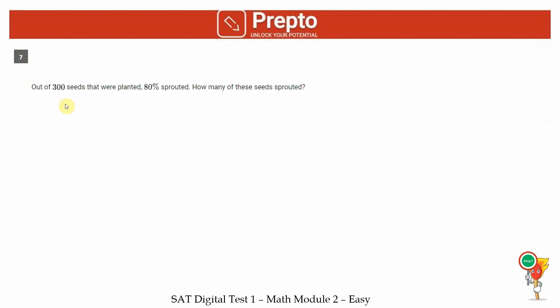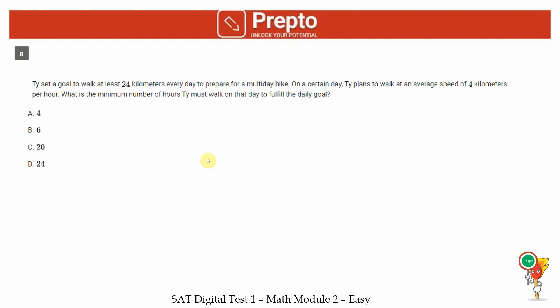Seventh question, out of 300 seeds that were planted, 80% sprouted. So 80% as a fraction is 80 by 100, which equals 4 by 5. So if 4 by 5 of 300 seeds were sprouted, that means we are looking at 240 seeds were sprouted. You could use a calculator or you can do this calculation.